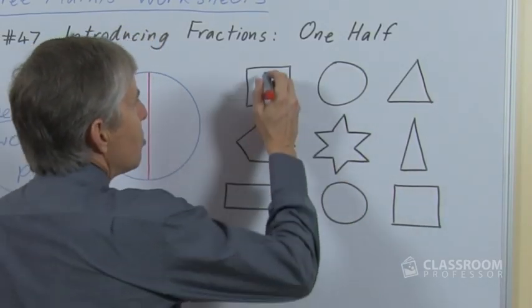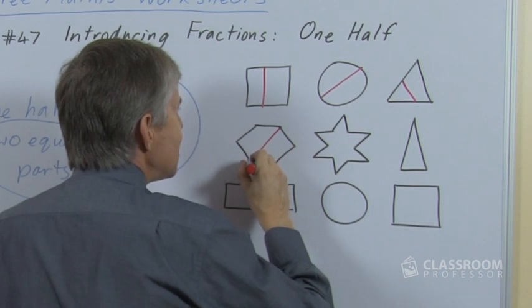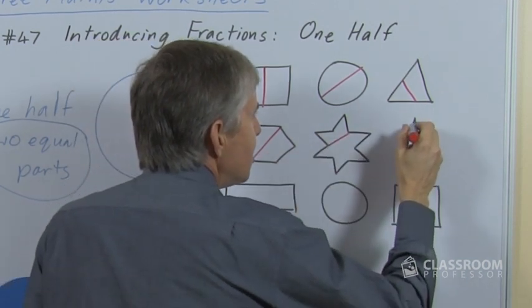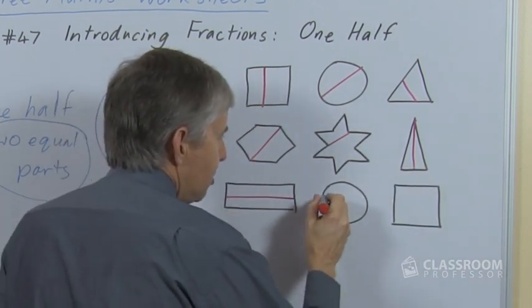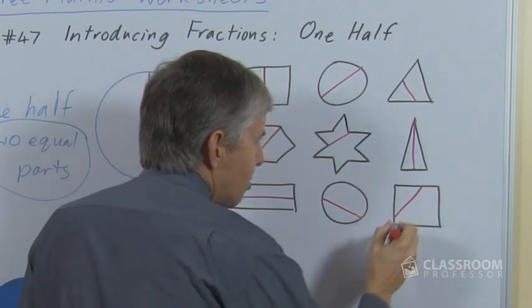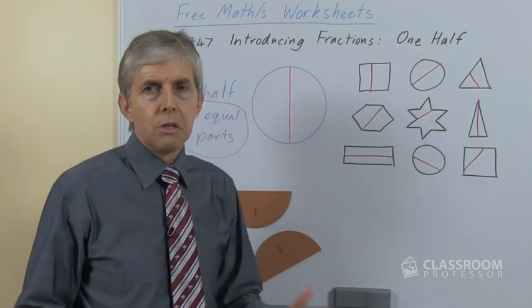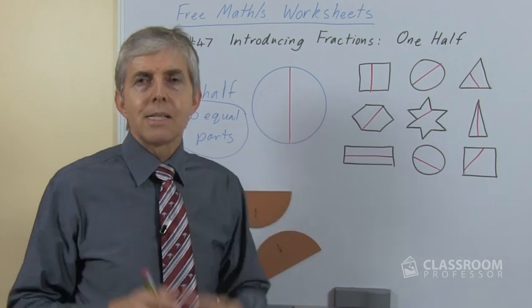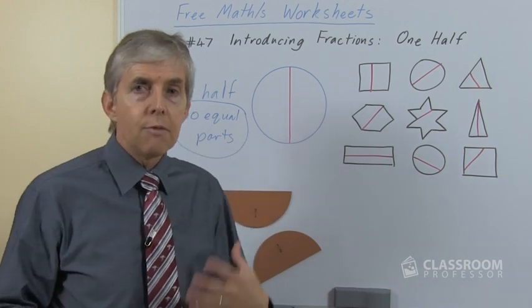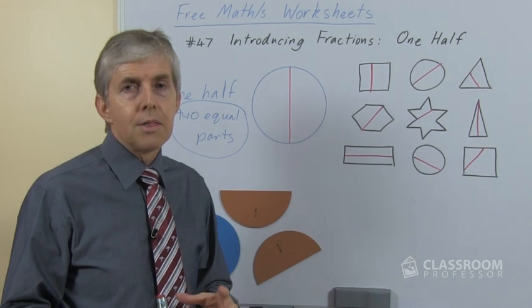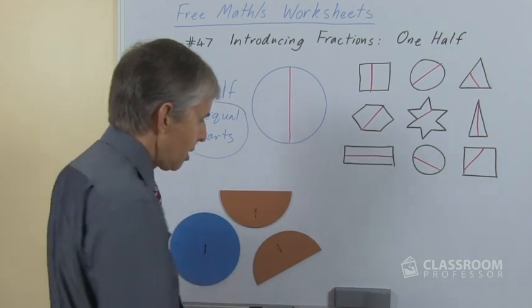So here are some shapes. What we could do is say, I'm going to divide these into two pieces and I want you to decide which ones are divided into a half and which ones are not. We're going to provide counter examples, so the students can fine tune their understanding of what a half is because we're building a category in their thinking. If all we ever showed them was two equal parts, they might just assume that half means one out of two instead of one equal part out of two equal parts.